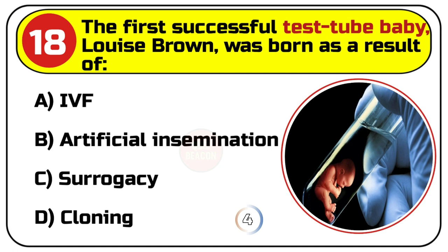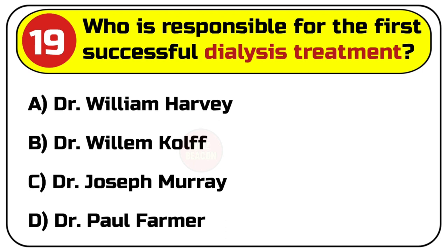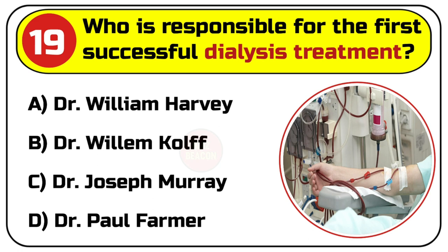Correct answer is A. IVF. Question number 19. Who is responsible for the first successful dialysis treatment? Options are: A. Dr. William Harvey, B. Dr. Willem Kolff, C. Dr. Joseph Murray, D. Dr. Paul Farmer.